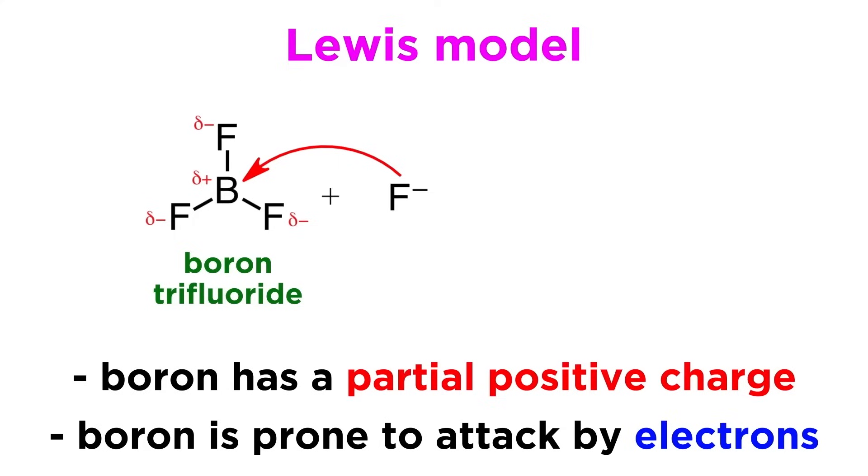Since positive charges and negative charges attract, which is essentially the central theme of the entire field of chemistry, a Lewis base like this fluoride ion can attack the boron atom to form a new bond, leaving us with BF4-.